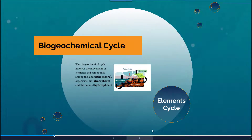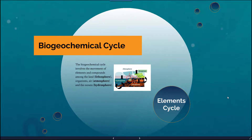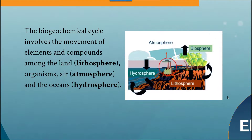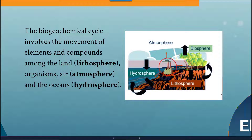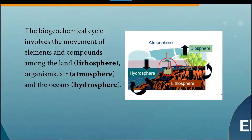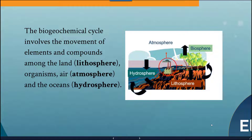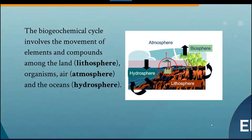The biogeochemical cycle refers to all of the movement of elements and compounds among the land or the lithosphere, organisms, the air or the atmosphere, and the oceans or the hydrosphere. We oftentimes talk about biogeochemical and chemical properties in reference to these different elements because they are all linked and there is a movement of materials between all of them.